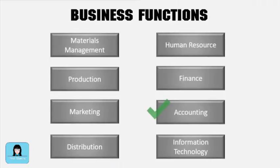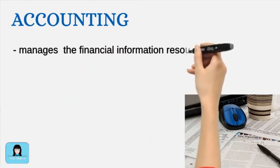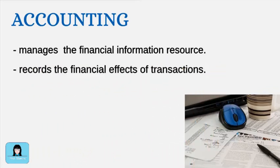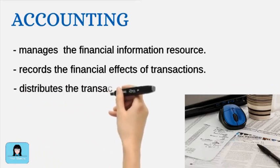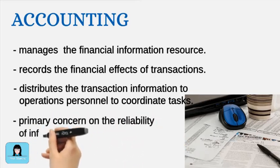Another business function is accounting. The accounting function manages the financial information resource of the firm. It plays two important roles in transaction processing. First, accounting captures and records the financial effects of the firm's transactions. Second, the accounting function distributes transaction information to operations personnel to coordinate many of their key tasks. Accounting is also concerned with the reliability of the firm's transactions, as reliability determines the value of information and unreliable information results in poor decisions.